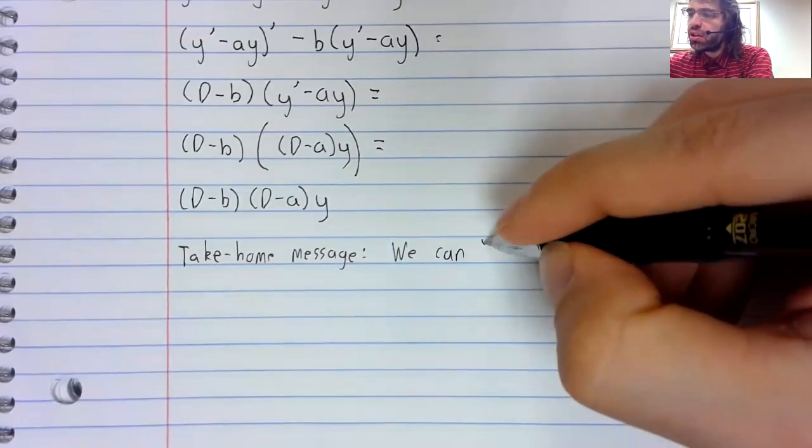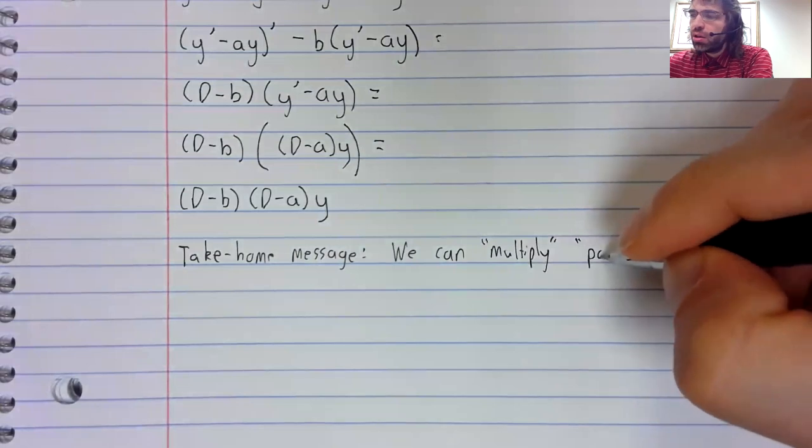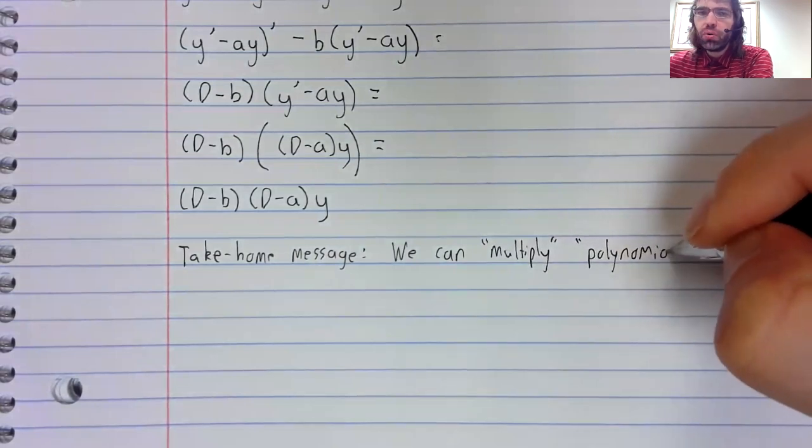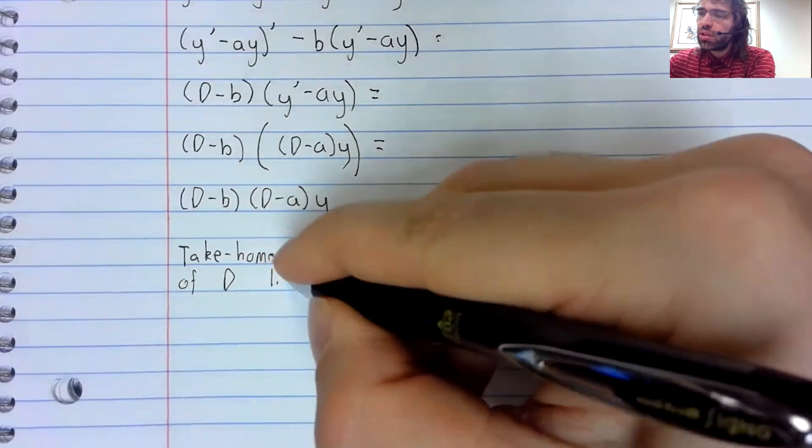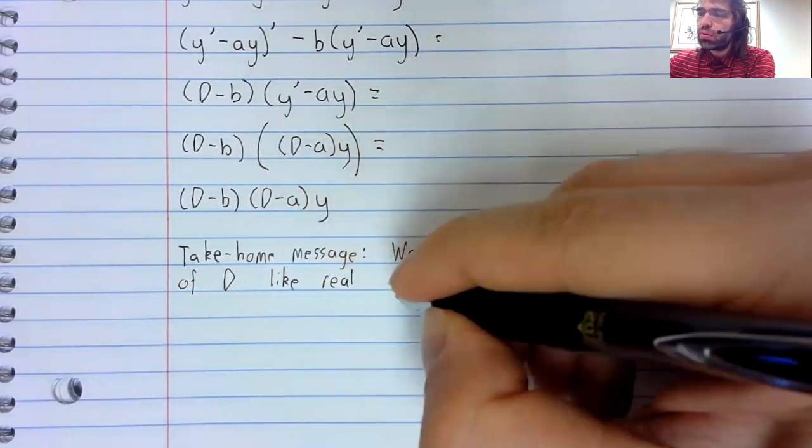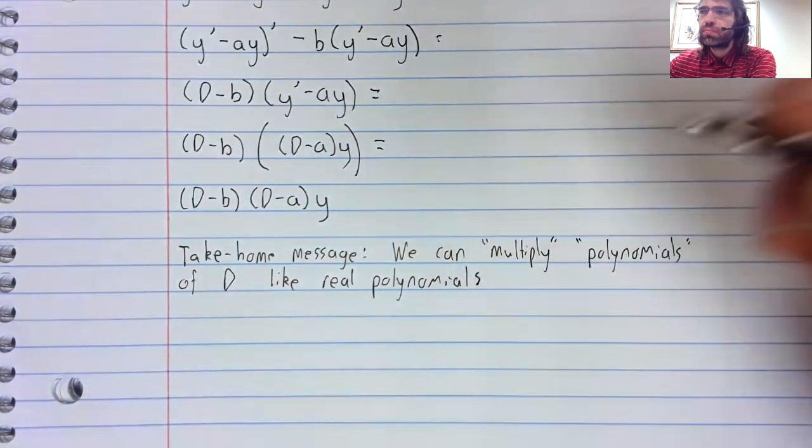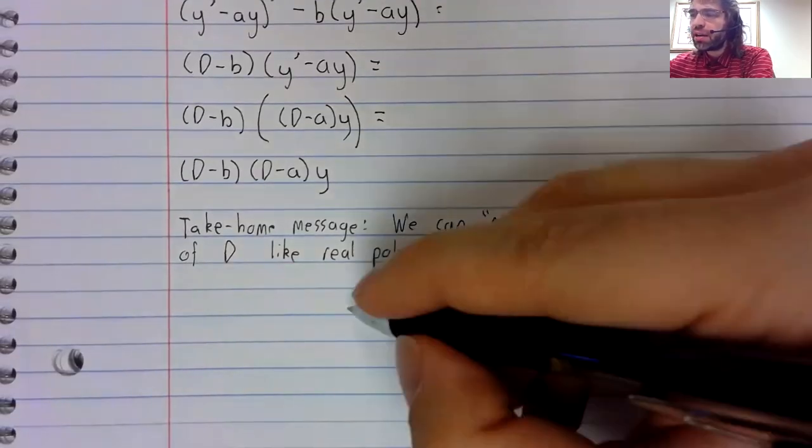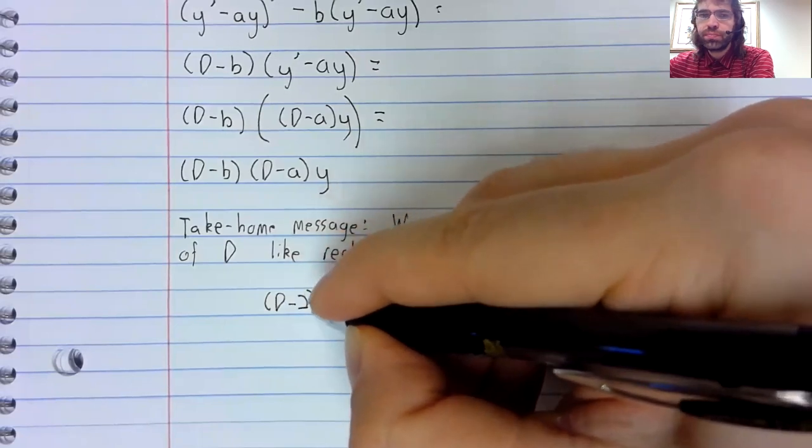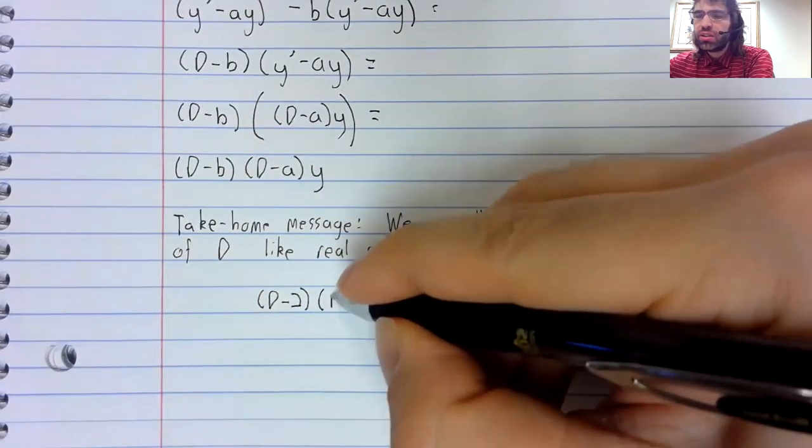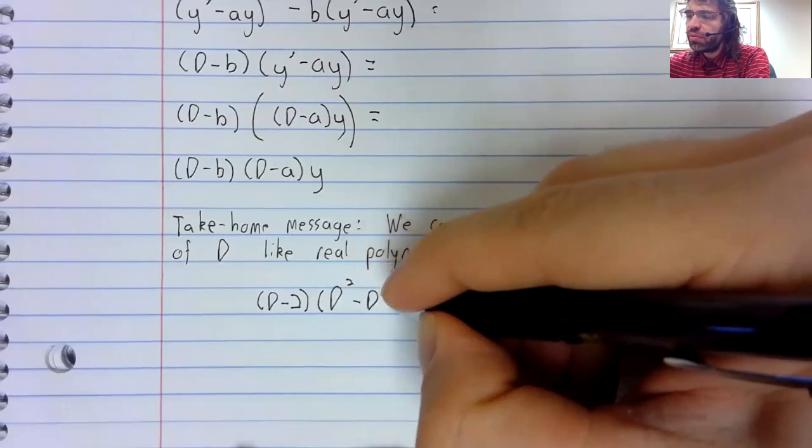Let's state a takeaway message from this proof. We can multiply polynomials of D like real polynomials.